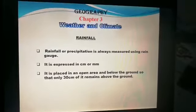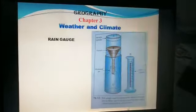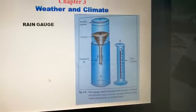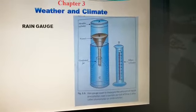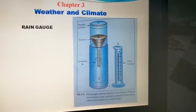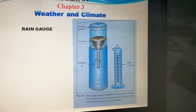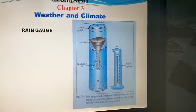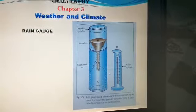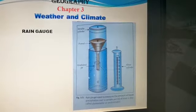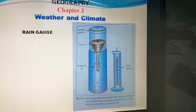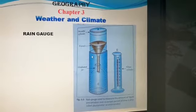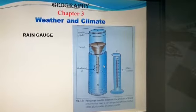Let's see how a rain gauge looks and how it works. This is the diagrammatic representation of a rain gauge, which measures the amount of rainfall. It consists of a metallic cylinder with a vessel inside it. On the top, a funnel is placed, and there is a graduated jar which collects the rainwater. The rainwater is poured into the measuring jar using this funnel, and the reading is taken at an interval of 24 hours.